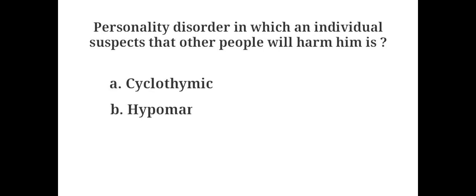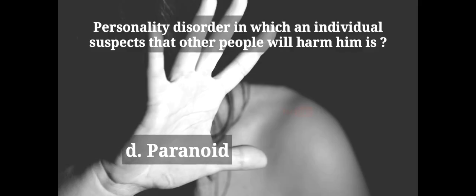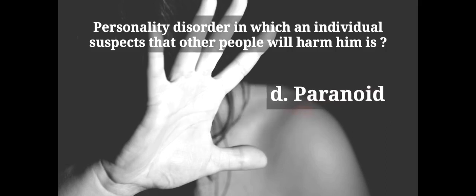Personality disorder in which an individual suspects that other people will harm him is: A. Cyclothymic, B. Hypomania, C. Melancholic, D. Paranoid. The answer is D. Paranoid. Individuals with this disorder assume that other people will exploit, harm or deceive them, even if no evidence exists to support this expectation.